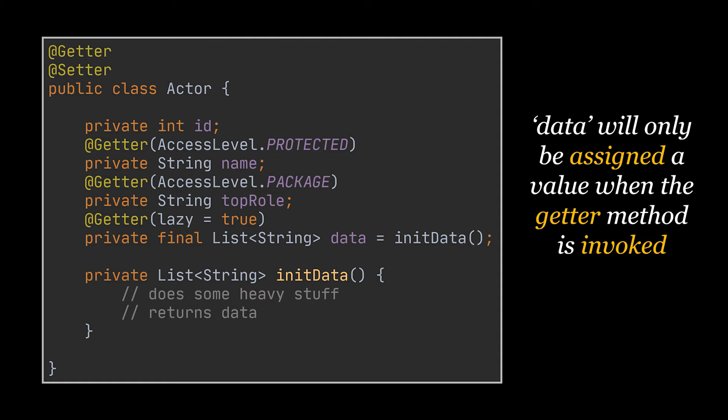The @Getter annotation provides even more customization. It can be called lazily using the lazy argument. If this argument is set to true for a particular field — in our case the data field — then this attribute will only be initialized when the getter method is invoked. In other terms, the initData method will only be called upon need so that the class can be loaded faster.